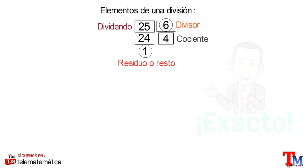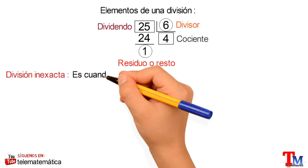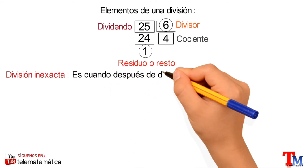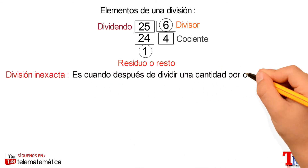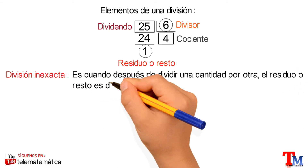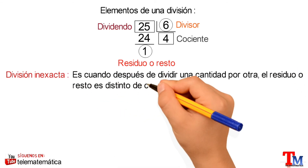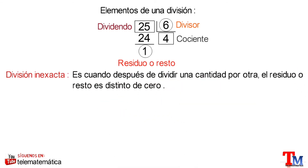A continuación, introduciremos el concepto de división inexacta, que se define como: es cuando después de dividir una cantidad por otra, el residuo o resto es distinto de cero.